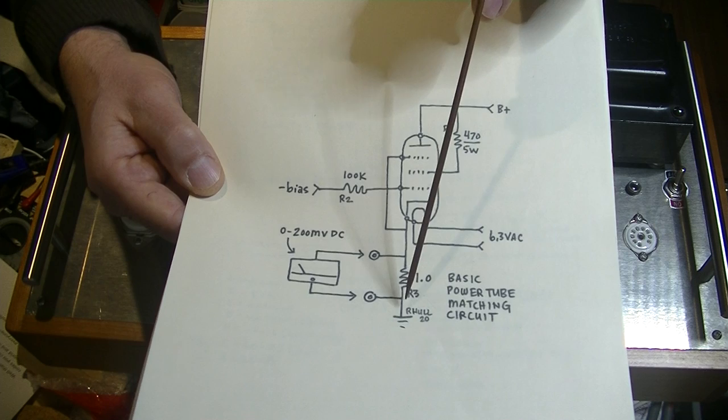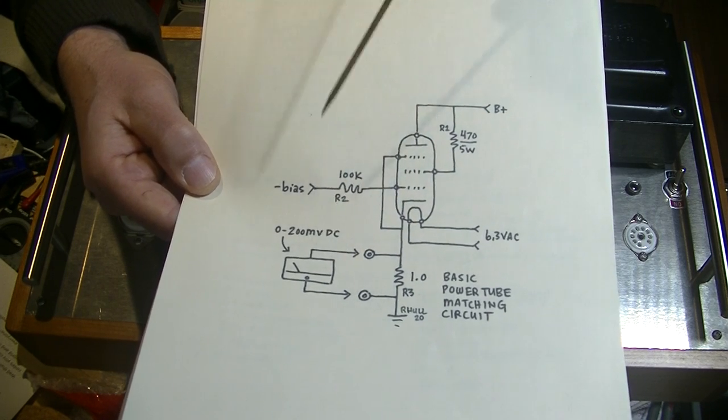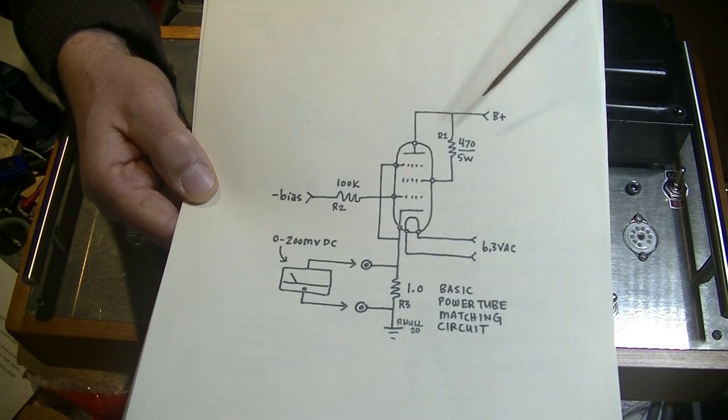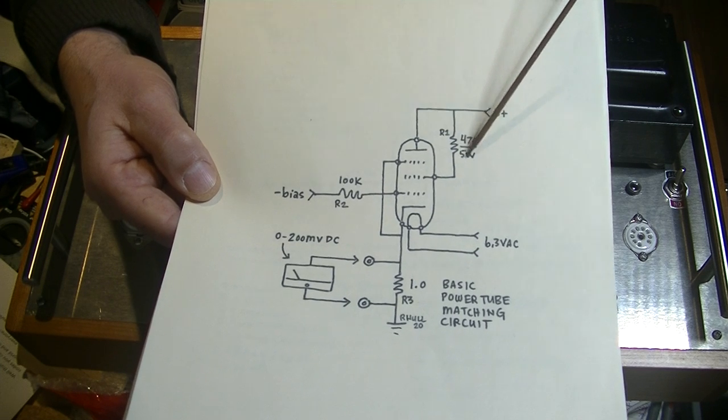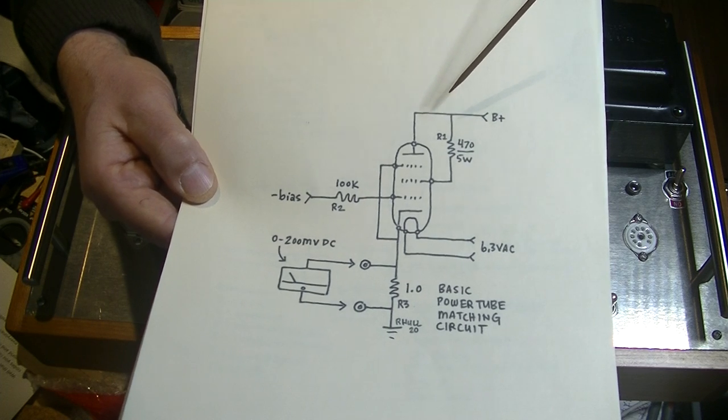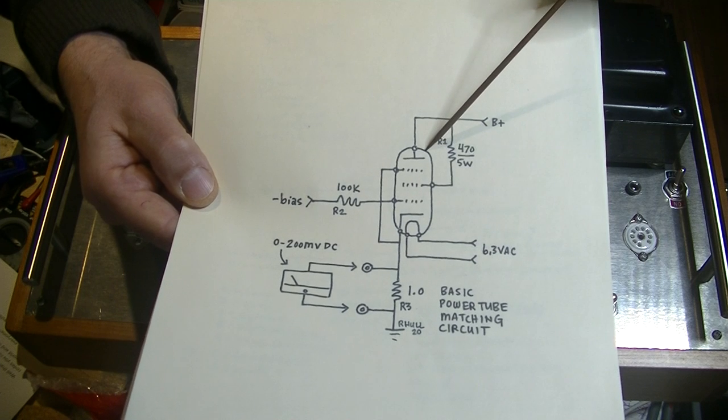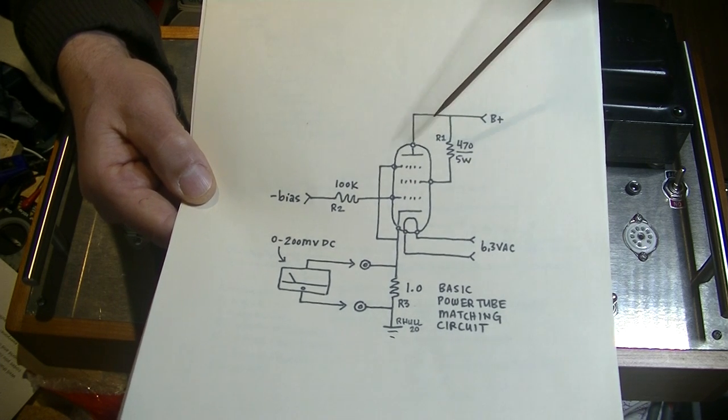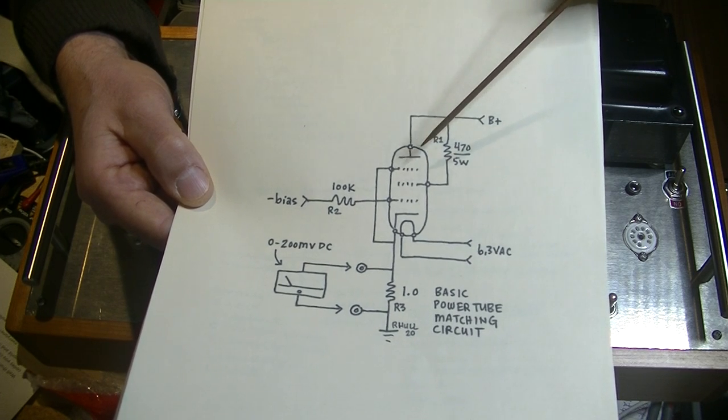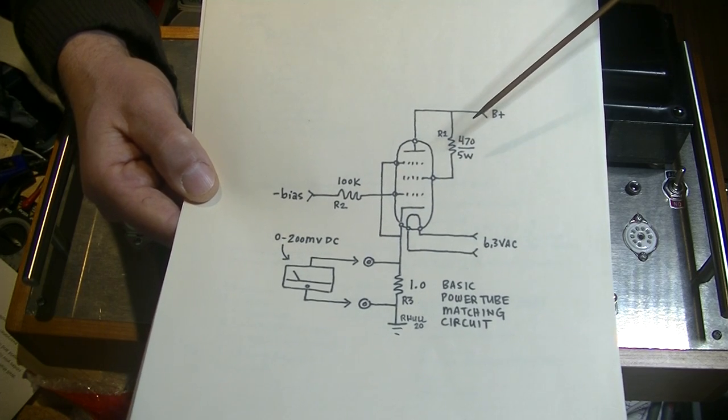And here's the cathode. And we take our measurement off the cathode through a 1 ohm precision resistor and it goes to ground. And missing in this diagram is a momentary switch, and we measure across that resistor. Now you may have noticed that we've got the screen grid is strapped through a 470 ohm 5 watt resistor to the plate. Or to our B plus. And what that does is it puts this tube into triode mode. Triode 3.